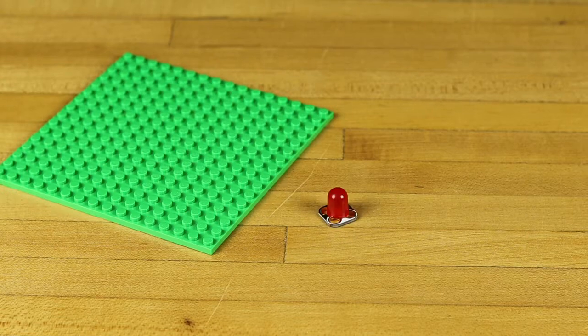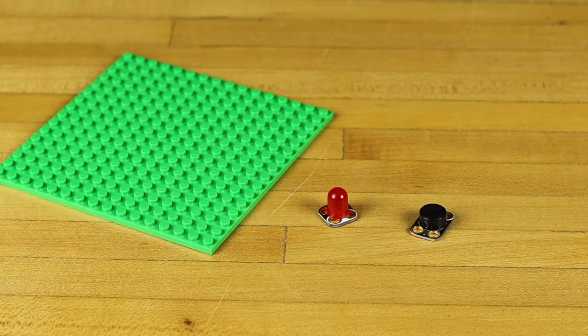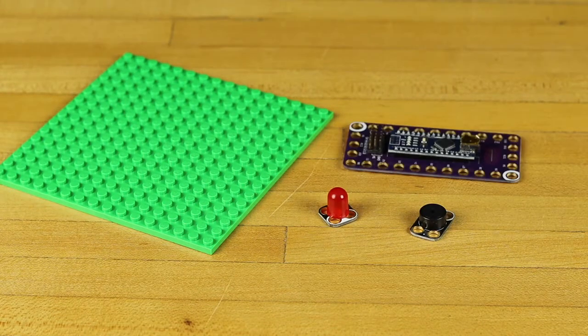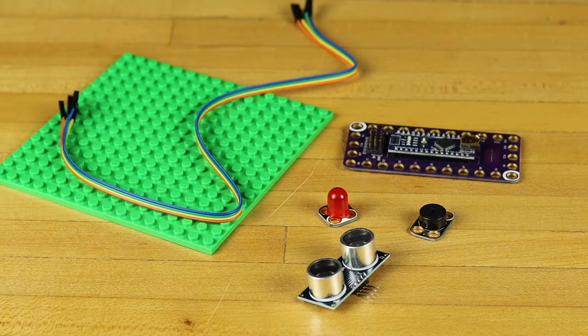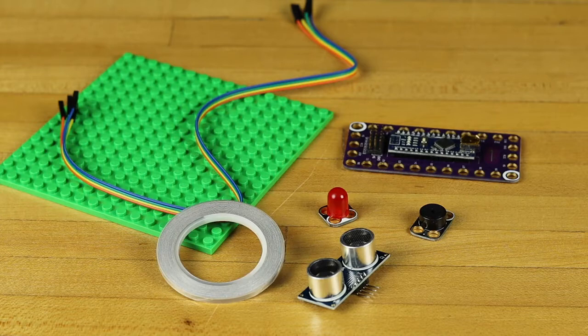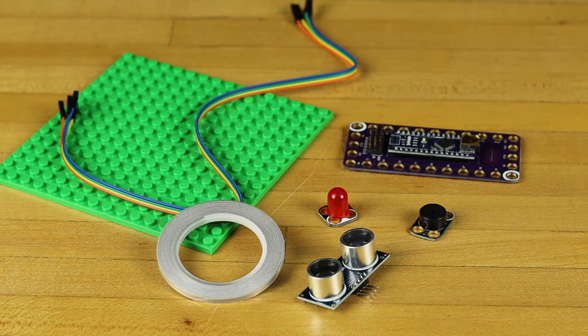Large Lego baseplate, a CrazyCircuits LED, a CrazyCircuits Piezo speaker, a CrazyCircuits robotics board, an ultrasonic rangefinder, some ribbon cable, some 1/8-inch maker tape, and you'll also need some additional Legos just because you'll want to build some stuff up.